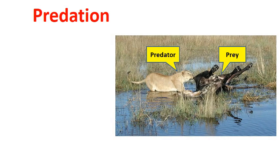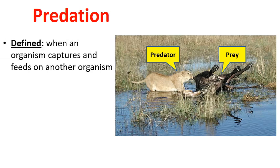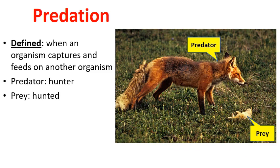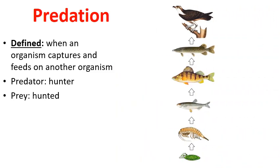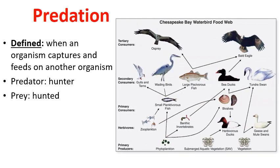Shifting back to community interactions, let's discuss predation. This is straightforward: one organism captures and feeds on another. The predator is the hunter and the prey is the victim — for instance, a fox has killed a prairie dog as its prey. We see this in food chains, where one organism is eaten by the next organism up, and food webs can be very complex because they show all the feeding interactions between all members within a community.